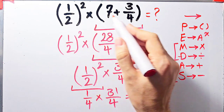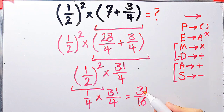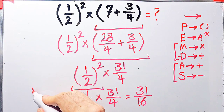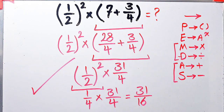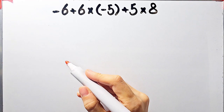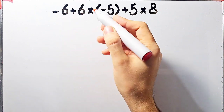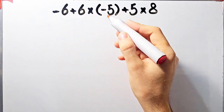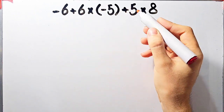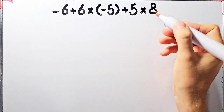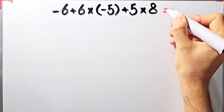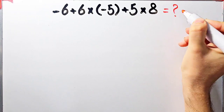If you're ready, let's solve another question about the PEMDAS rule. The question is: negative 6 plus 6 times negative 5, plus 5 times 8. What is the answer of this question?